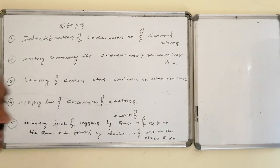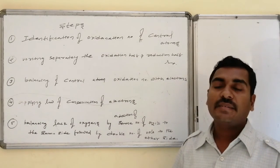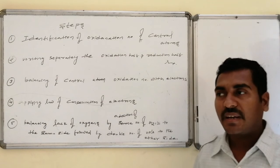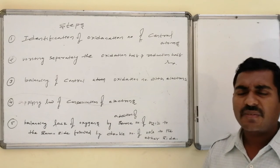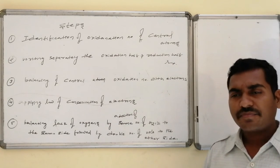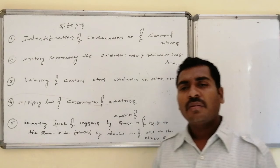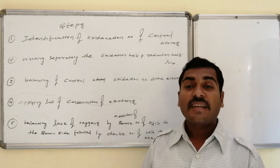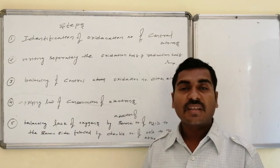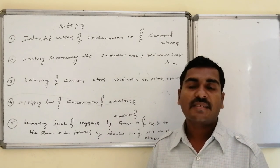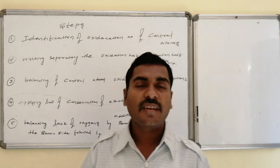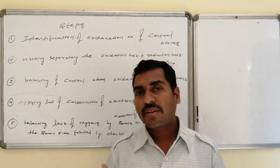Summary of steps: identify oxidation numbers of the central atom; write separate equations for the oxidation half reaction and reduction half reaction; balance central atom oxidation numbers with the involved electrons; apply the law of conservation of electrons and write a combined equation; balance lack of oxygen atoms by adding the same number of water molecules to the side with excess oxygens and double the number of OH⁻ ions to the other side — this balances oxygens and hydrogens simultaneously. The resulting balanced ionic equation, on introduction of the spectator ion, is converted to the molecular form of the balanced equation.